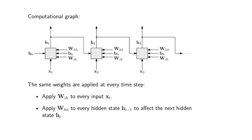The computational graph for a recurrent neural network will look like this. In these graphs, what you have is little nodes. The nodes are operations that you perform on the inputs of the nodes, and normally what you have is input vectors or parameter matrices serving as the inputs to these operational blocks.